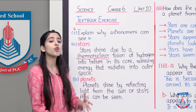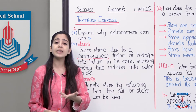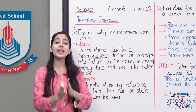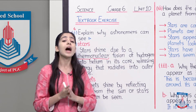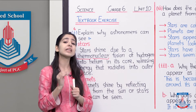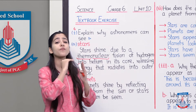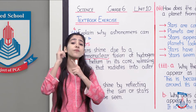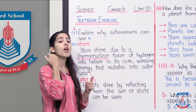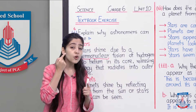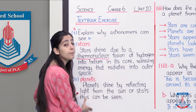Ab jo planets hain, woh toh non-luminous object hain — woh toh light bana hi nahi sakti, unhone light ko reflect karna hota hai from a luminous object. Matlab, agar kisi source se light aa rahi hai, toh yeh jo planet hai, yeh us light ko reflect kar dega. Jab woh light reflect hogi, matlab apni direction change karegi, planet se takra ke, aur humari aankhon mein padegi — toh humein nazar aa jayega woh object jo yahan pe hai planet.